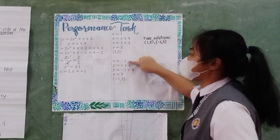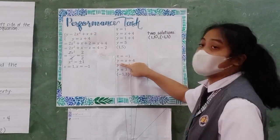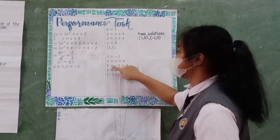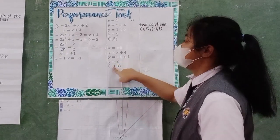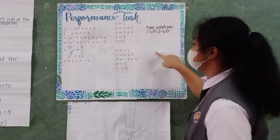Again, x equals -1 and we will substitute again with the equation y equals 2x + 4. That would be y equals -1 plus 4, y equals 3. Then the coordinate will be (-1, 3).